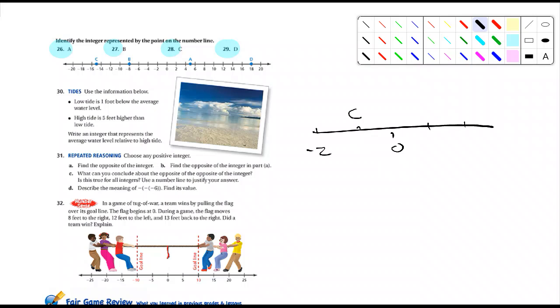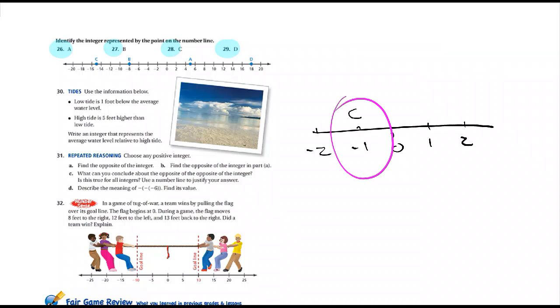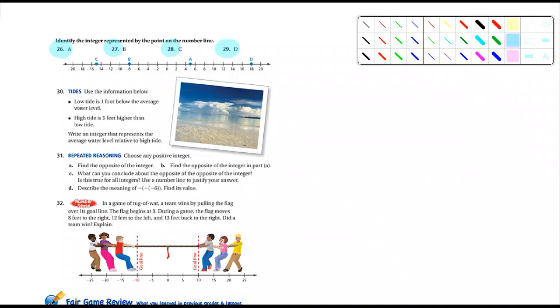And I have a letter C right over here. And so, this is negative 2, negative 1, 1, 2. What does letter C represent? Negative 1. Negative 1. That's easy. It is very easy. Literally gives you the answer. Right. Yes. Yeah, it's very easy. All right.